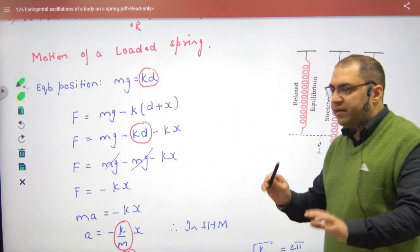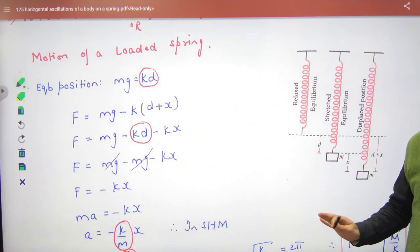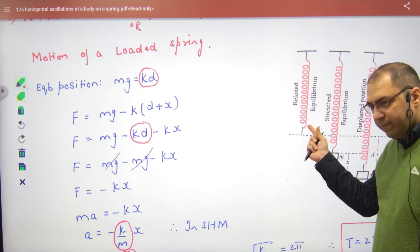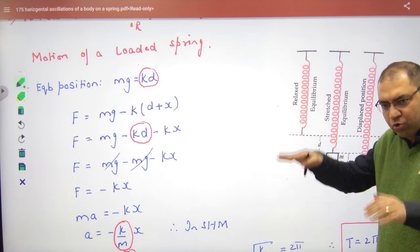Suppose that a spring is at its natural length. You put a mass on it and leave it. So the mass moves up and down.